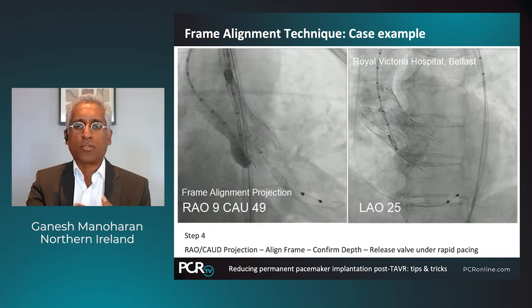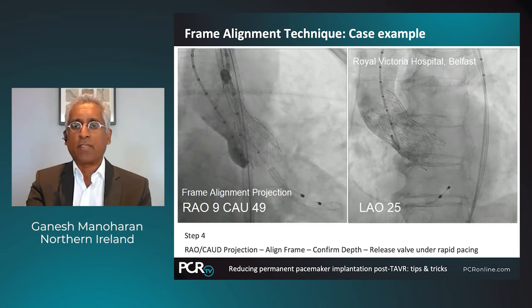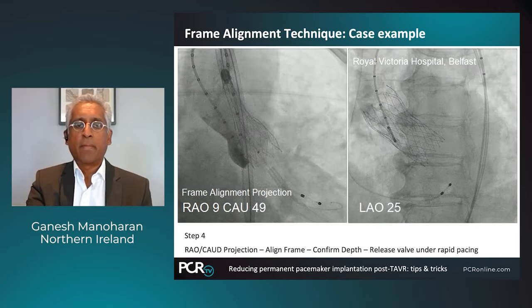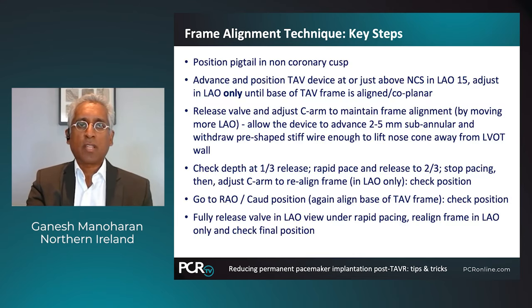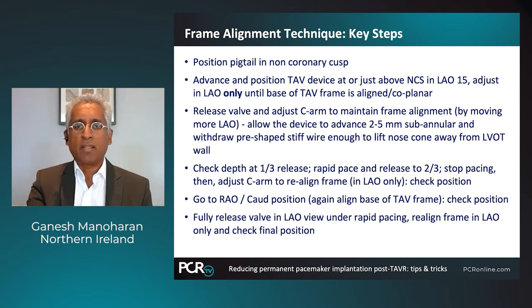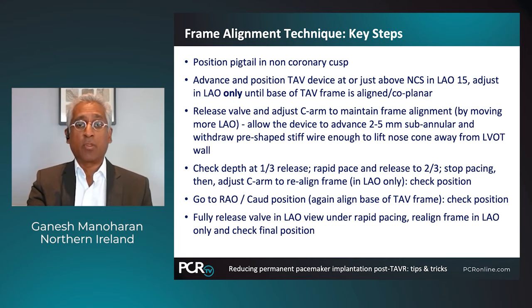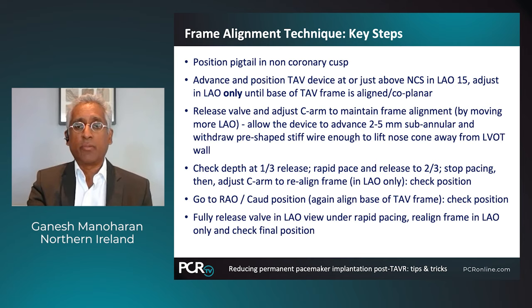Take an angiogram — you can see that the Navator is fully expanded, equidistant in both the left coronary and non-coronary, no leak. This patient went home the next day with no conduction changes and no complications. To summarize: position the pigtail in the non-coronary sinus, advance the valve to the annulus, start releasing constantly aligning the inflow portion of the frame coplanar in the RAO view only. Reference the pigtail on release, rapid pace from one-third to two-thirds and during full release. Always double-check in the RAO caudal position, aligning the frame, and you get reproducible depth on both sides with good results.